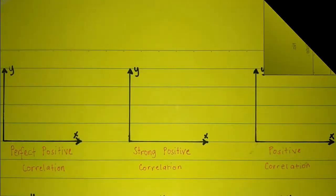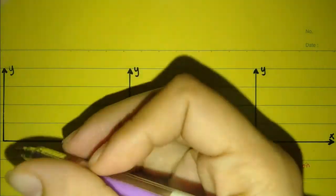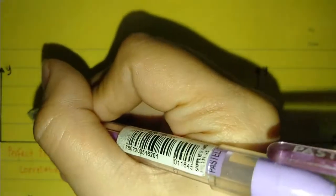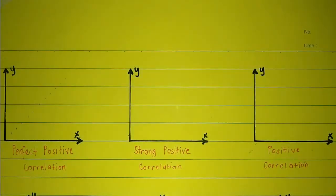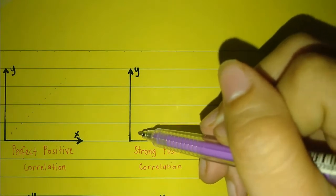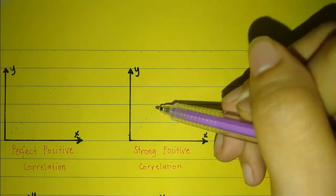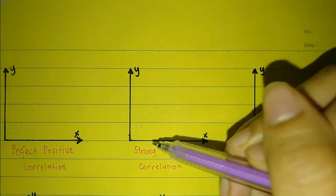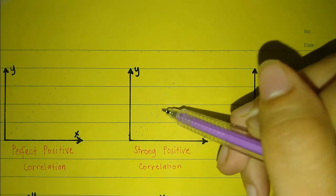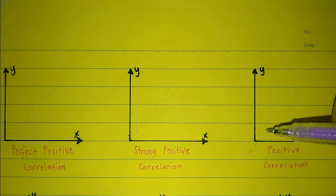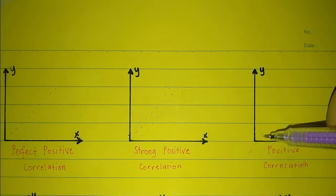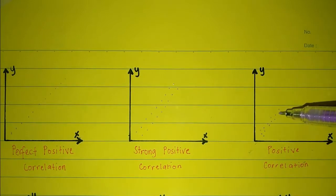The following are the graphs for the linear regression and correlation. The first is the perfect positive correlation, expressed at positive 1. Second is the strong positive correlation. Positive correlation is a relationship between two variables such that their values increase or decrease together.